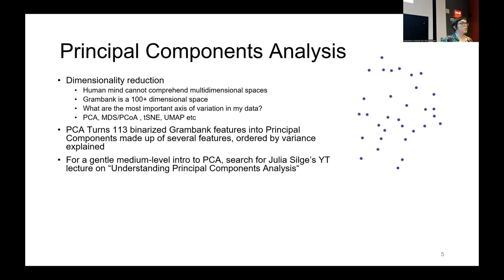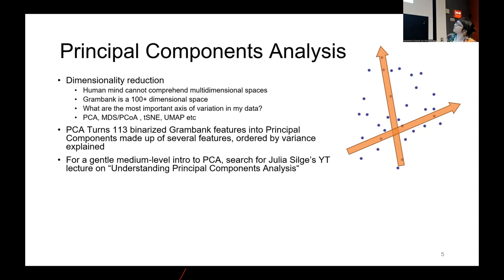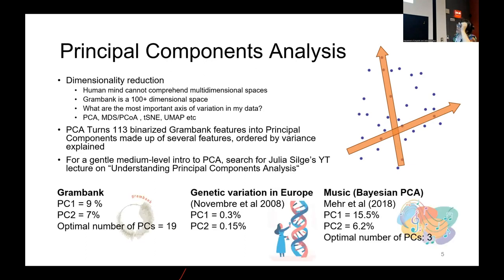If you're curious about how PCA works, I recommend the YouTube lecture by Julia Silge — it's about 10 minutes and really accessible. What the components do is: imagine your data points form a cloud, and you shoot an arrow through it along the longest stretch of the cloud, then the second arrow along the second-longest, and so on. When we did this for GrammBank, the first component explained 9% of the variance and the second 7%. A non-graphical Cattell scree test found the optimal number of components to be 19.